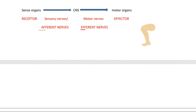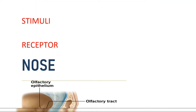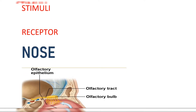Sensory nerves or afferent nerves transmit signals from the receptor to the CNS, while motor nerves or efferent nerves transmit signals from the CNS to the effector. Keep this flowchart in mind — it will simplify the mechanism of olfaction, gustation, hearing, and everything you will be learning further.